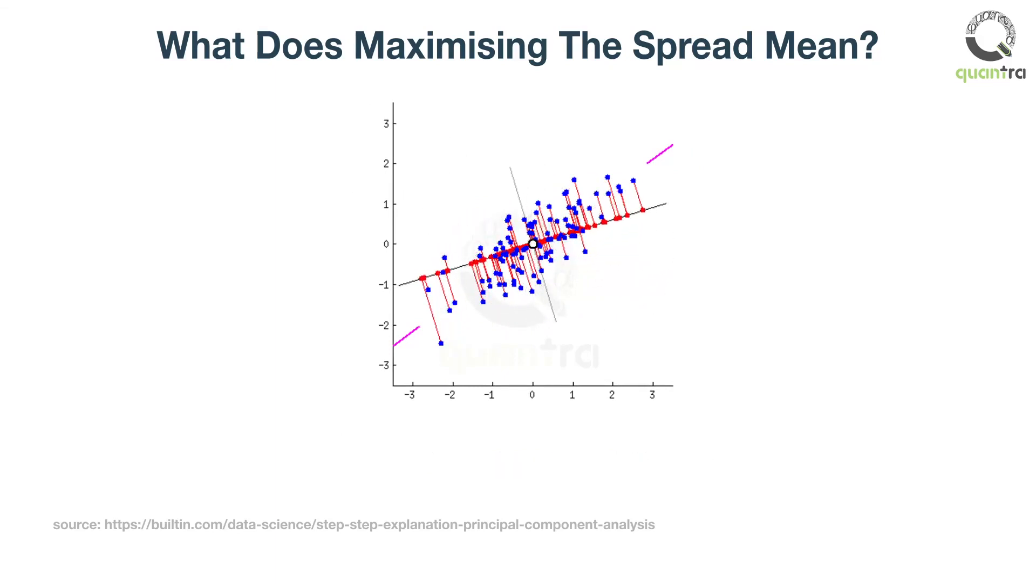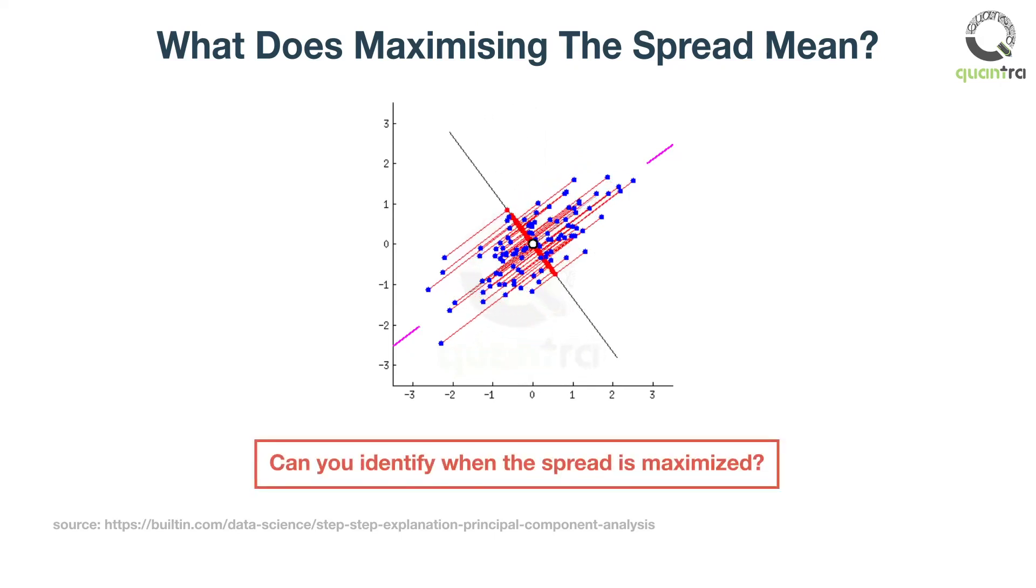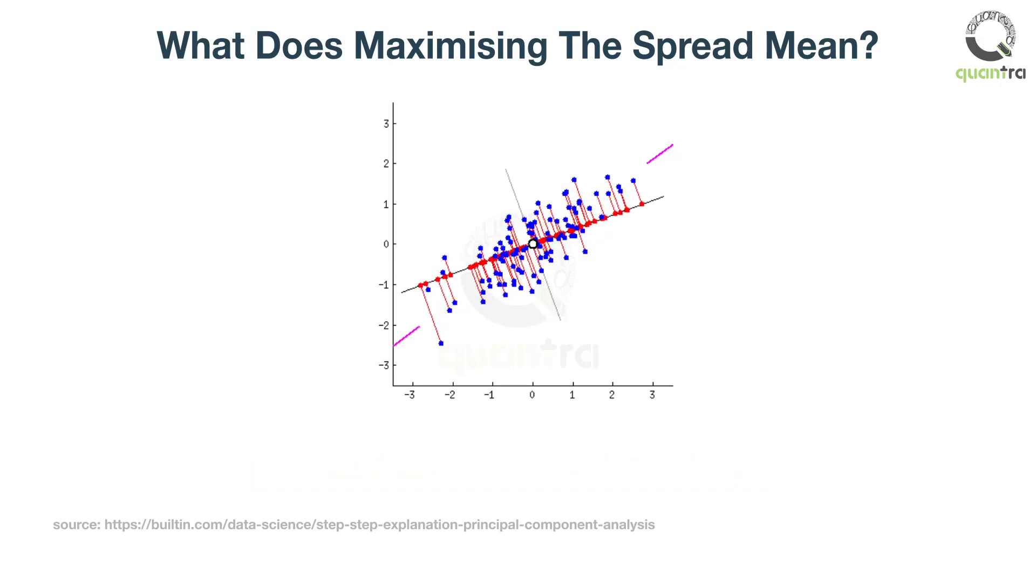Pay close attention to how the spread of the red points change while the black line rotates. We have to find a line where the spread between red dots is maximized. Can you identify when the spread is maximized? You will notice that the spread between red points is reached when the line points to the pink ticks. This is the best line which is used to transform from two dimensions to a single dimension.